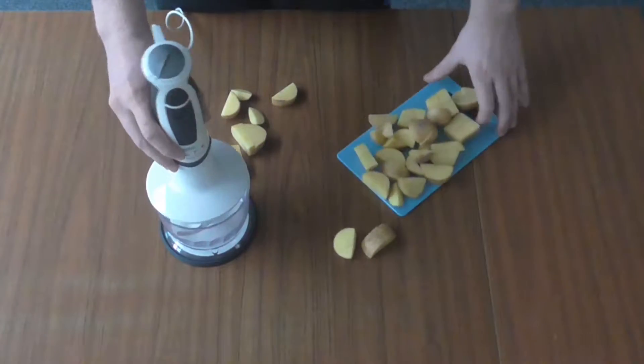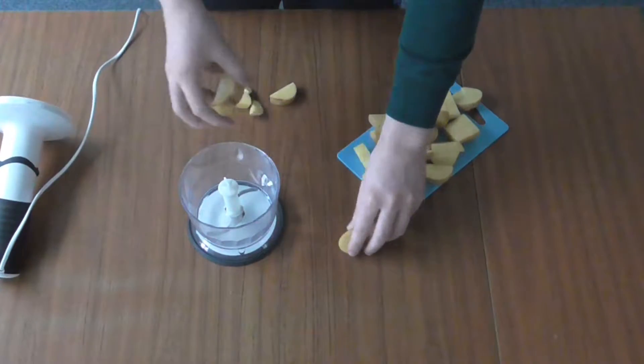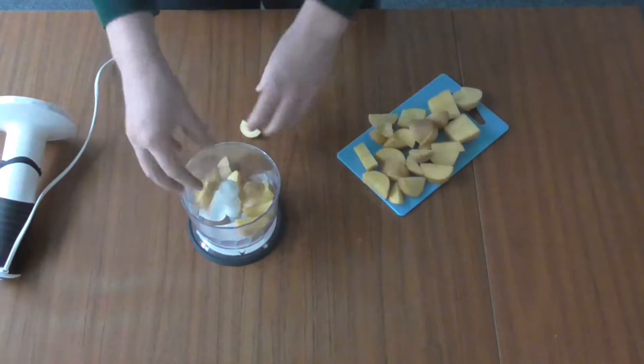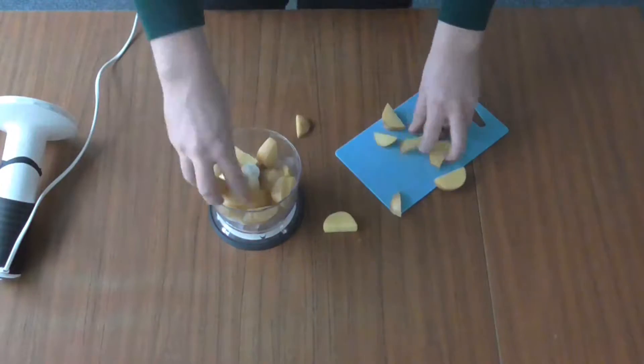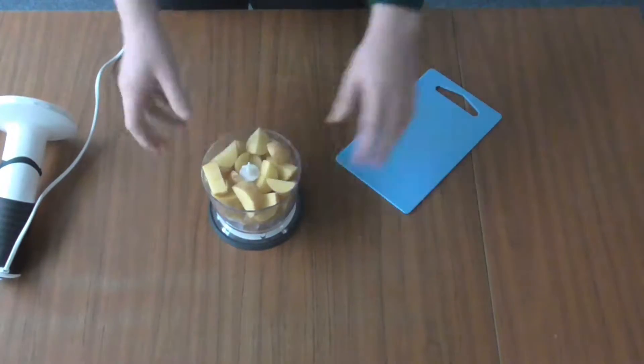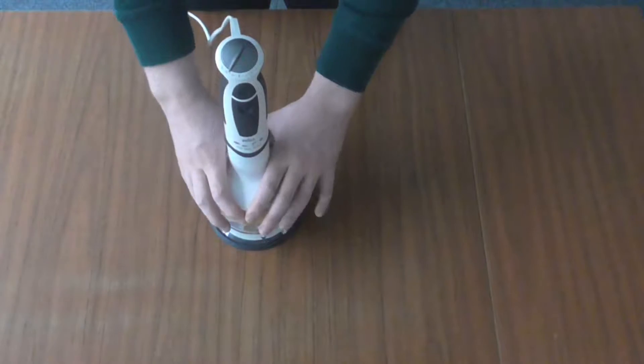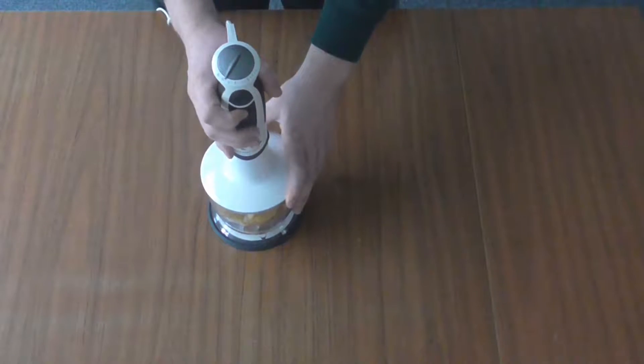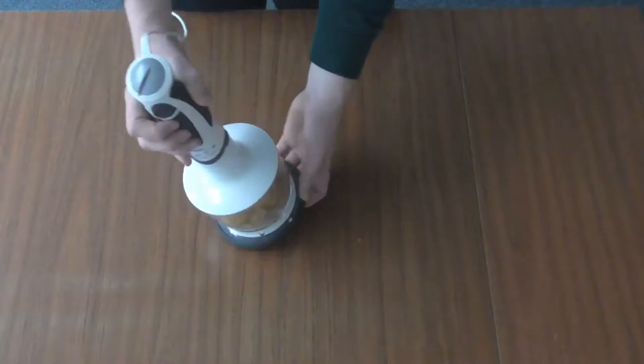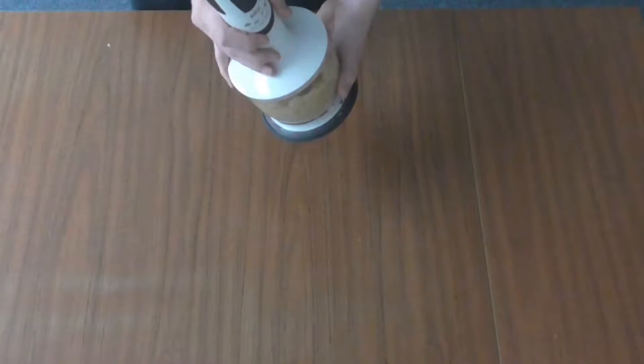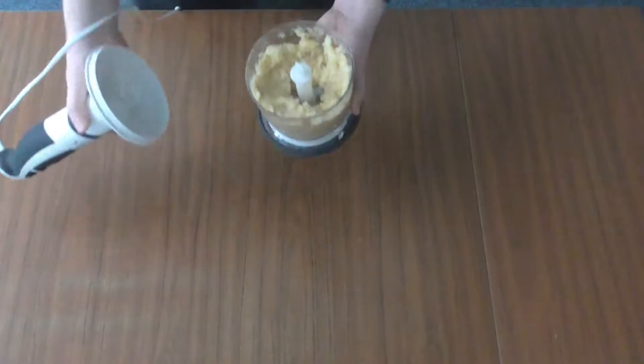So now you can put all the small potato pieces into the mixer. I'm using this mixer because I think it's really handy for the things I have to use it for. So put the lid on and start grinding and mixing it into small pieces of potatoes.